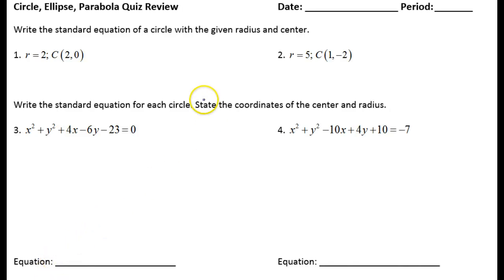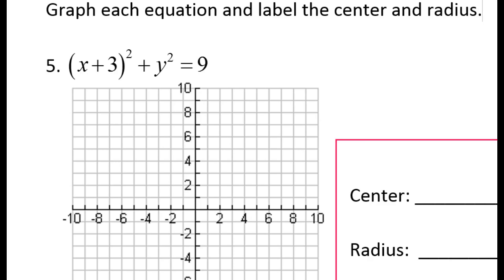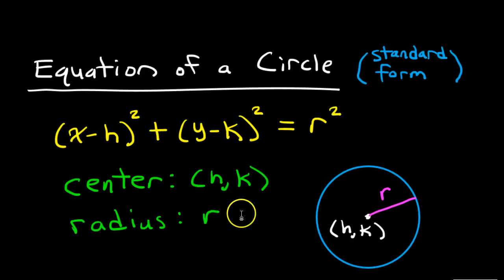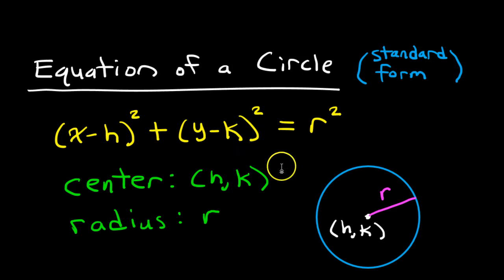In this video, I will show you how to write the standard form equation of a circle if you're given the radius and the center, or if you are given the general form equation. I will also show you how to graph a standard form equation of a circle. The standard form equation for a circle looks like this, where h and k is the center, and r is the radius.